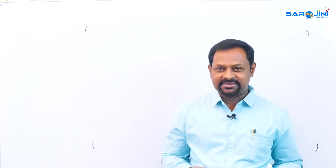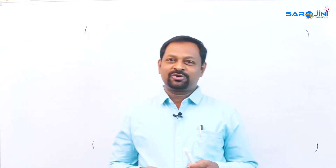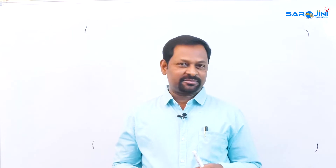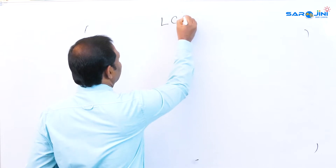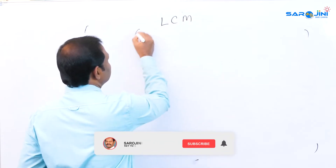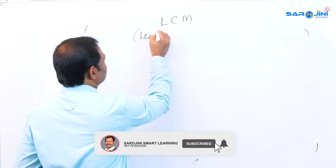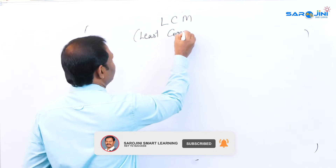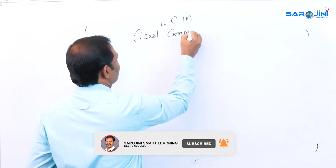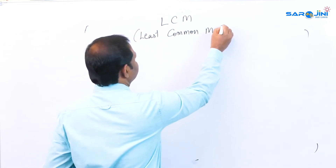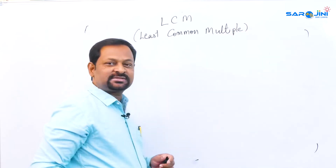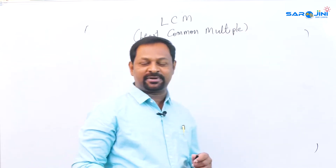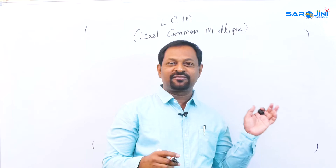For the last few episodes we have been dealing with different topics. Today we are going to deal with the LCM topic. LCM is nothing but Least Common Multiple — the topic name itself is Least Common Multiple. We have three words: Least, Common, and Multiple.